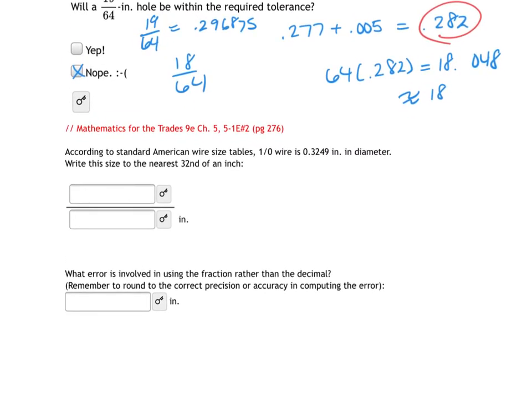Okay, let's take a look at the last one here. And they're asking me to figure out what this would be to the nearest 32nd of an inch. So I'm going to take my 0.3249, multiply it by 32. And I get 32 times 0.3249. I end up with 10.3968.